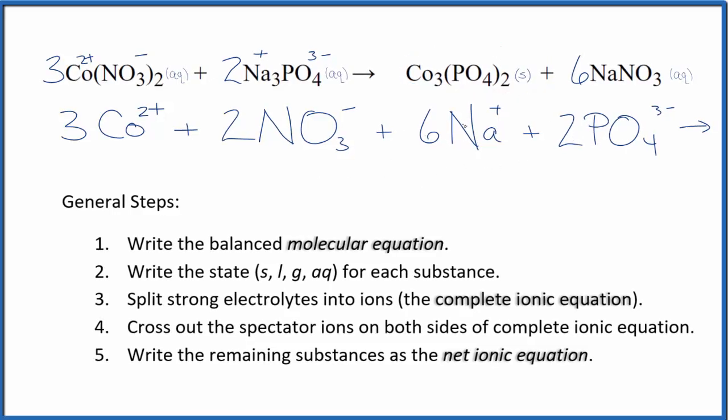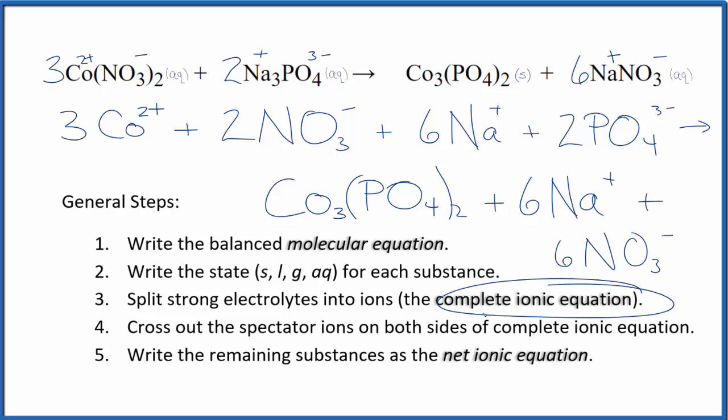For the products, we don't split solids apart, so we'll just have solid cobalt-2 phosphate. That's our precipitate. And then sodium we said is positive, the nitrate is negative, 6 sodium ions, just like in the reactants, plus we'll have 6 nitrate ions. That's just like the reactants as well. So this is the complete ionic equation.